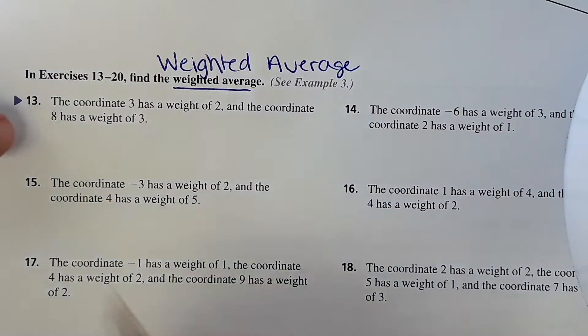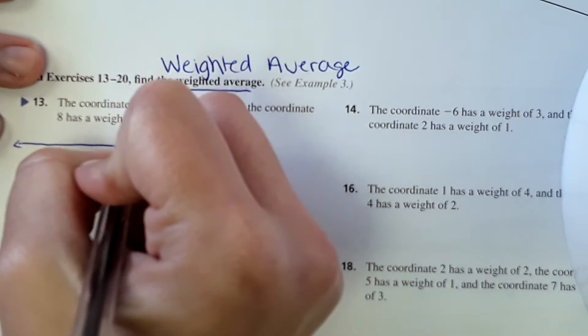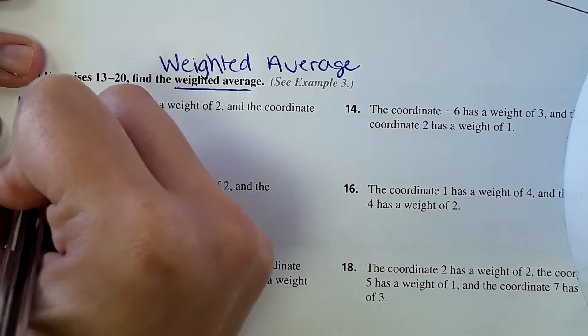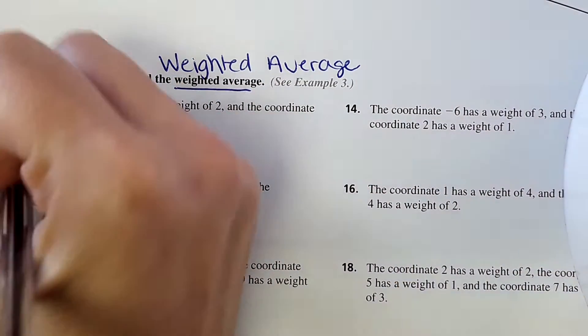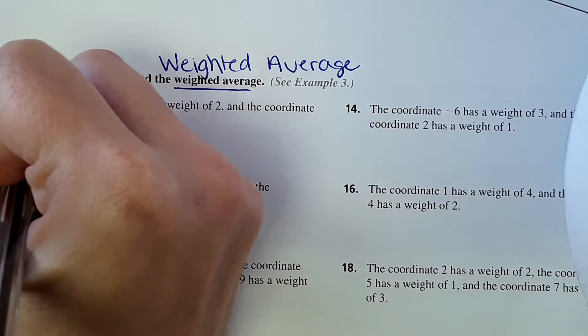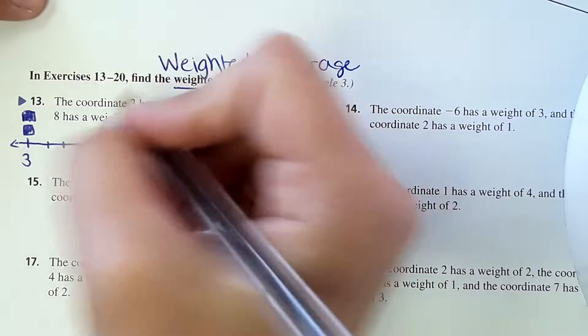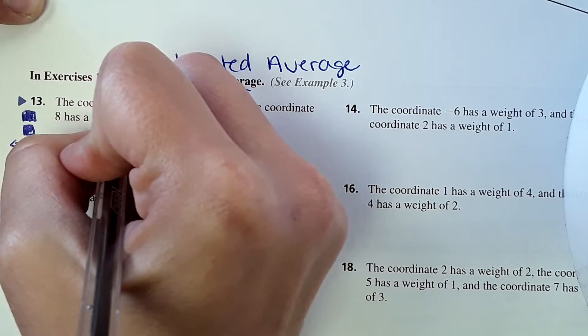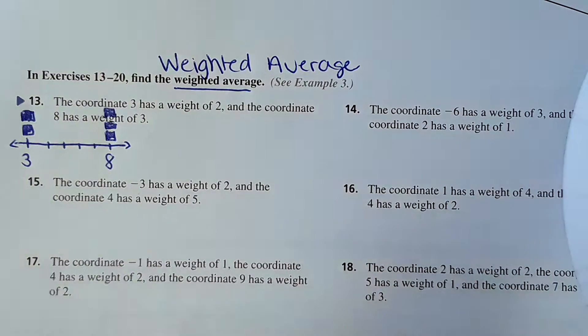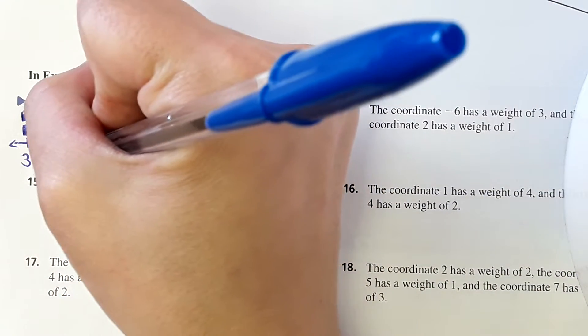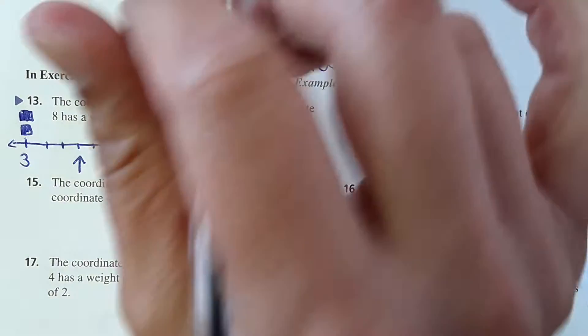So number 13, it says coordinate 3 has a weight of 2 and coordinate 8 has a weight of 3. So here's what this would actually look like. Let's say you have a number line, coordinate 3 right here, 4, 5, 6, 7. You have coordinate 8 right here. It says coordinate 3 has a weight of 2, so imagine like 2 weights right here. And coordinate 8 has a weight of 3, so imagine 3 weights right here. So what it wants to know is where does it balance? Where's the balancing point? The balancing point would be somewhere right here because you have more weight on this side.